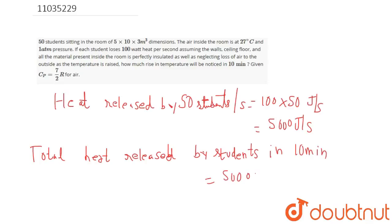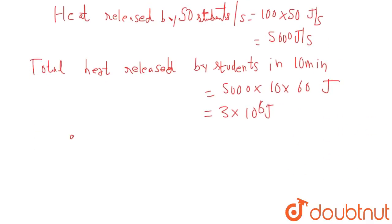Total heat is 3×10^6 Joules of energy released. Since this process is at constant pressure, q will be equal to delta H, and that is equal to 3 into 10 raise 6 Joules. We know delta H is equal to n Cp delta T equals 3 into 10 raise 6 Joules, and n we can calculate.